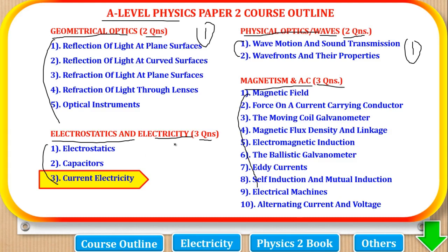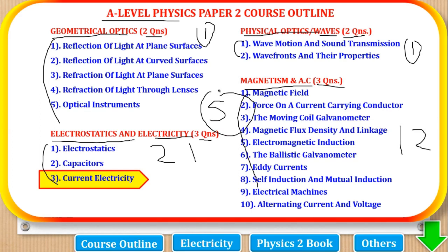For these last two parts, a student can choose to answer 2 from Electrostatics and 1 from Magnetism, or 1 from Electrostatics and 2 from Magnetism to make the 5 required questions. So any of the 2 options is okay.